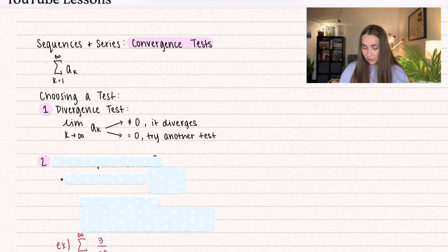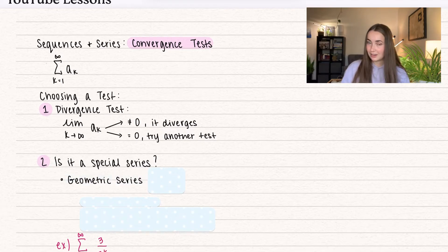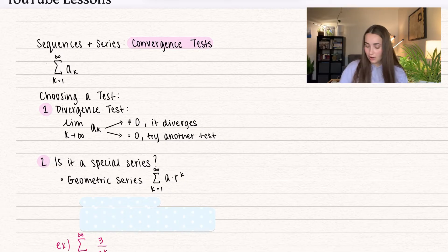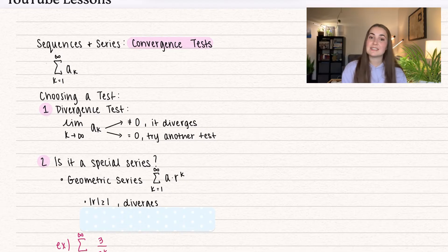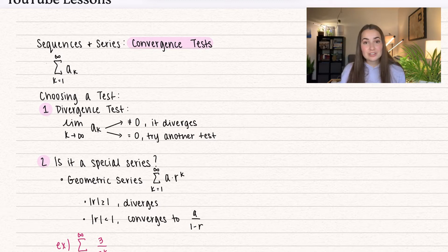So here are the rest of the tests. First, look to see if it's a special series. One special series is going to be the geometric series — that's the summation of a times r to the power of k. A is going to be the first term, and r is going to be the common ratio. If the common ratio is greater than or equal to one, the series is going to diverge. If r is less than one in absolute value, it converges, and we know it converges to a over one minus r.